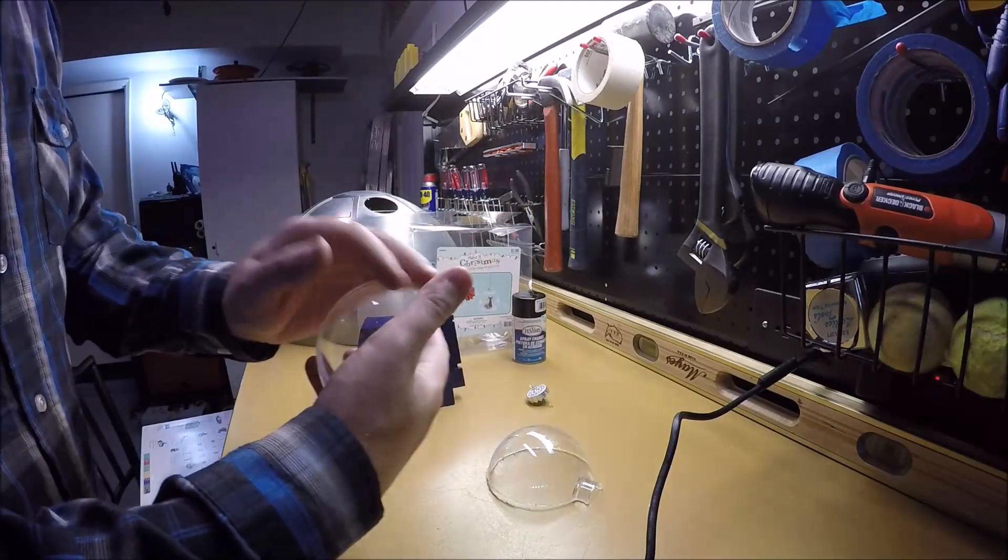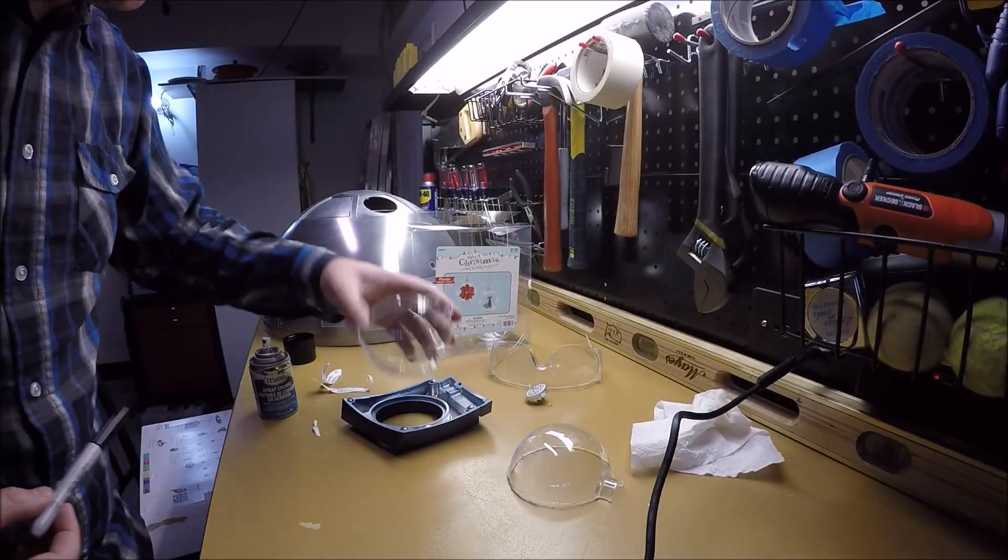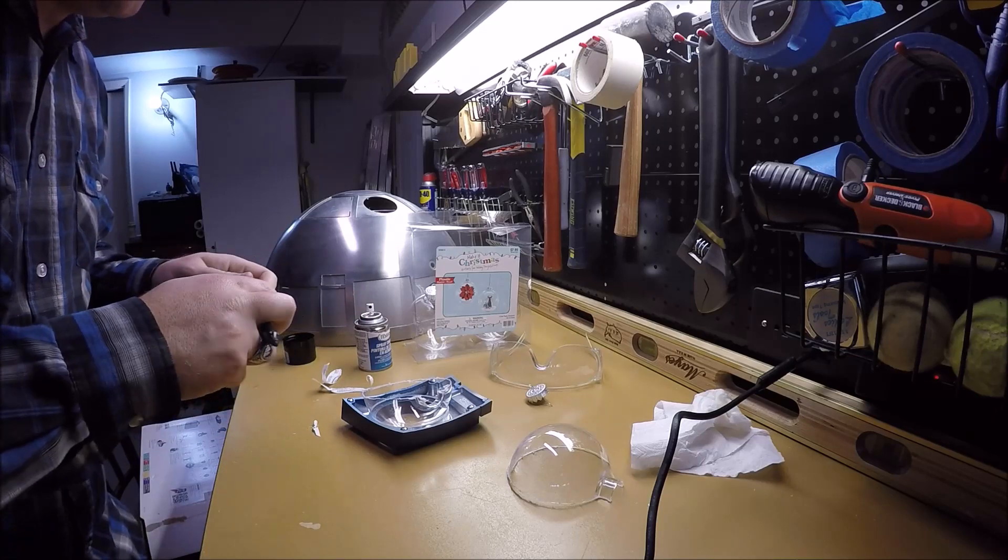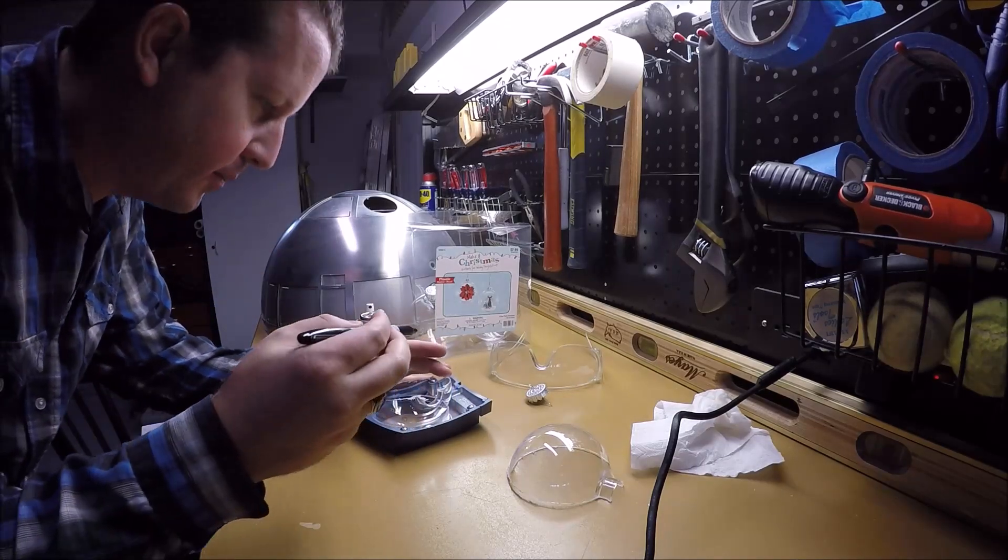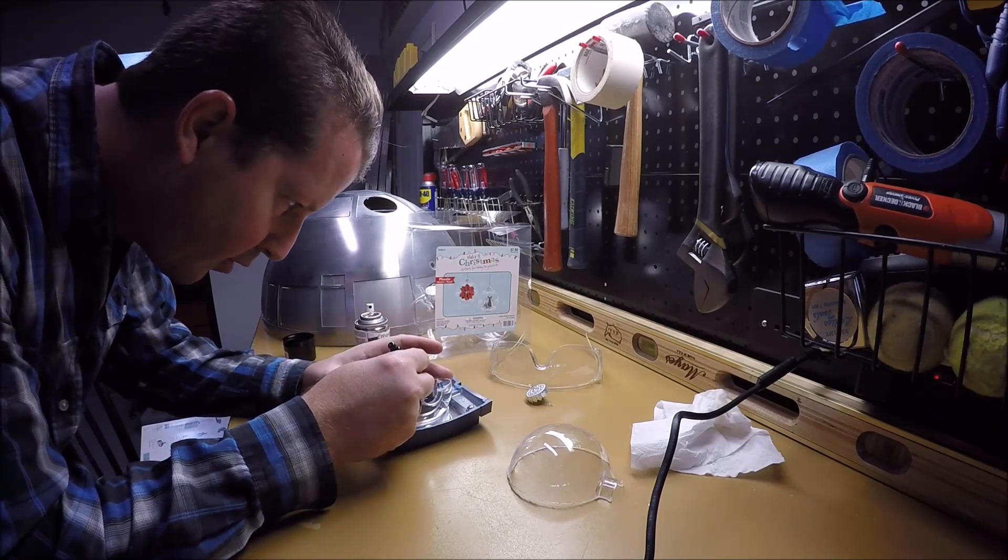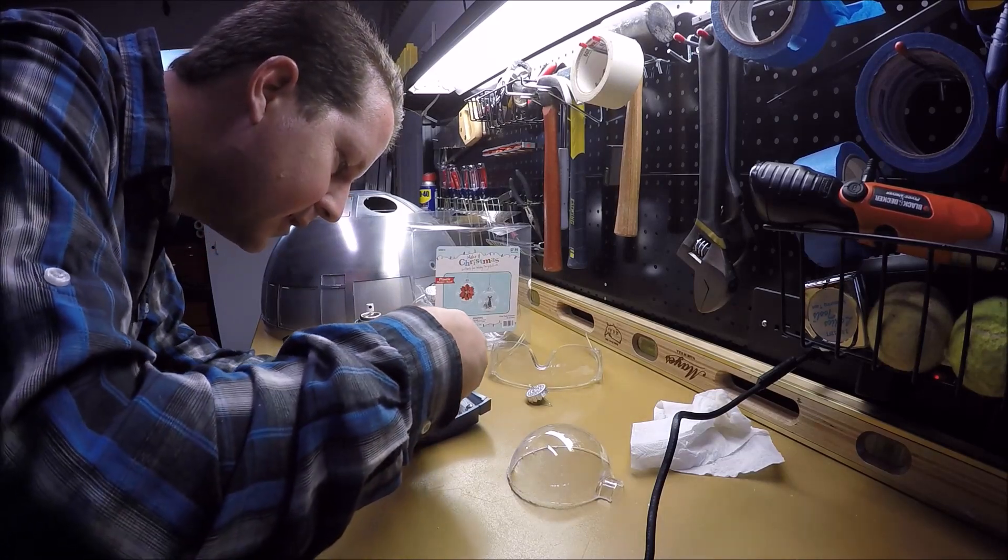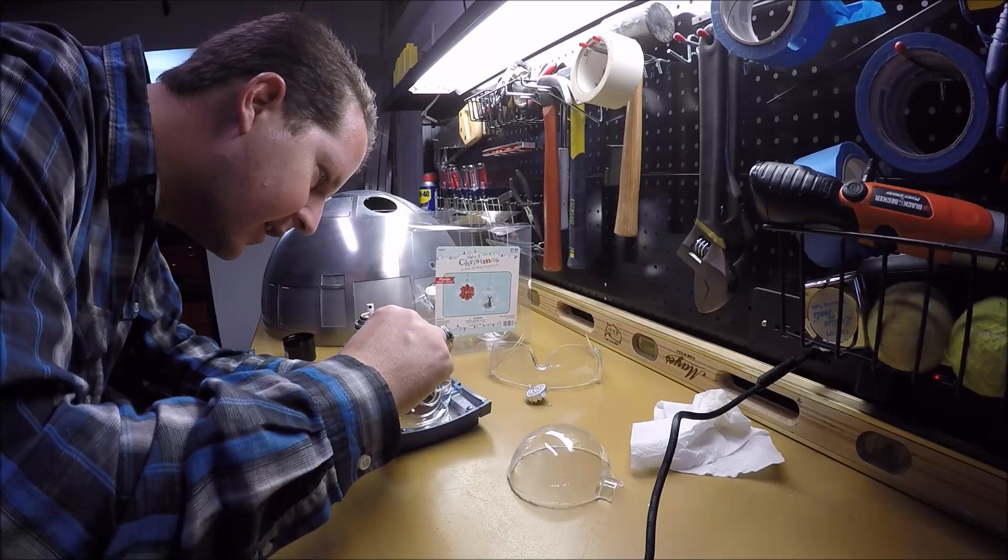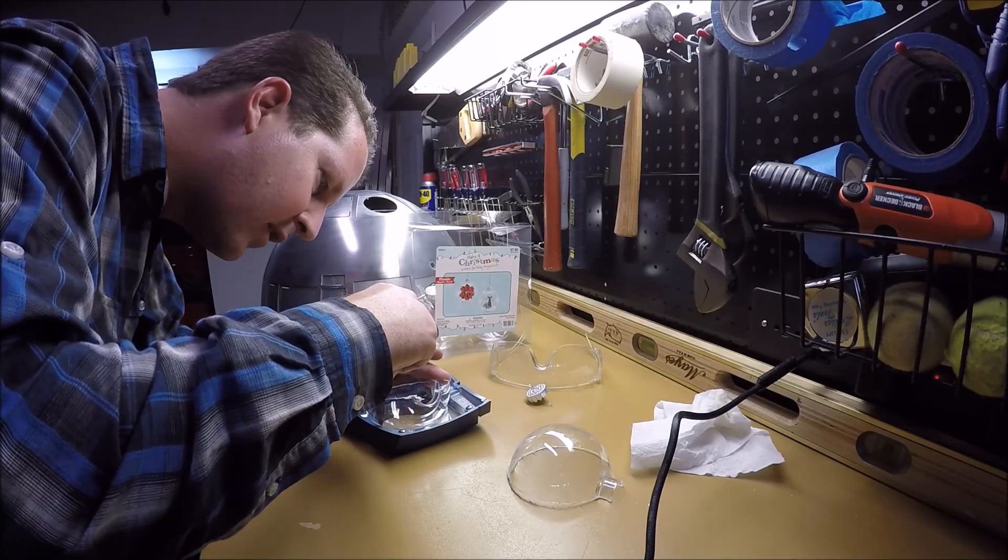So I got it all cut out now. I now have it cut in half, so now I have access to the inside. So what I'm going to do now before I paint it is I'm going to use a black Sharpie and draw a line around the inner part to know where I need to cut it so it can lay flat inside of the radar eye assembly.